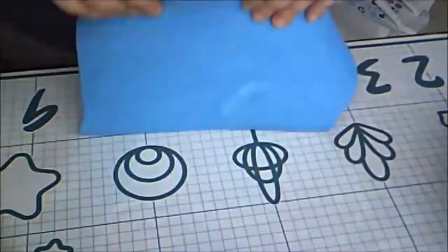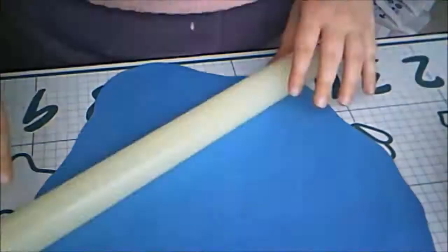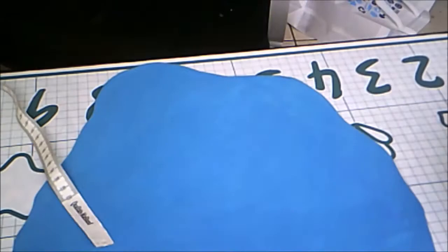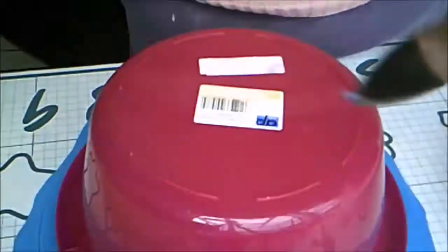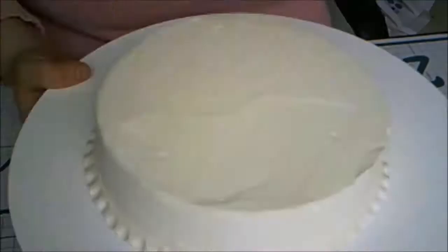Then I rolled out some blue fondant. I measured how large it needs to be and cut out a circle using a large bowl as a template. Then I laid it over the cake.